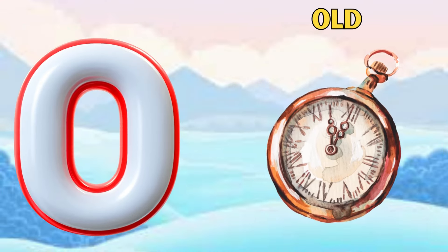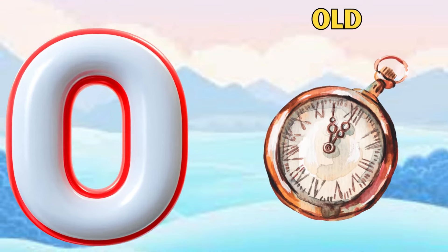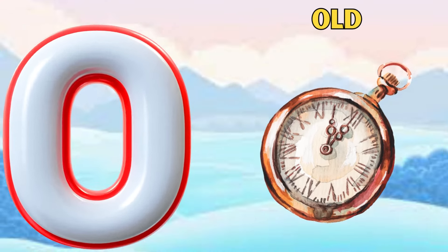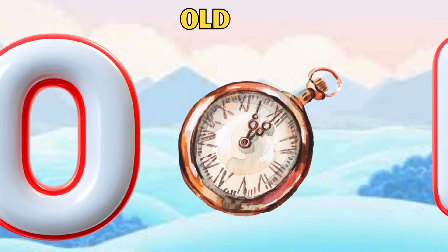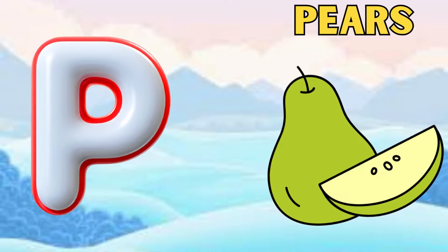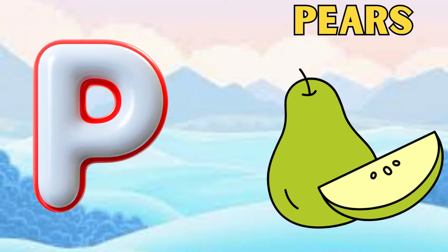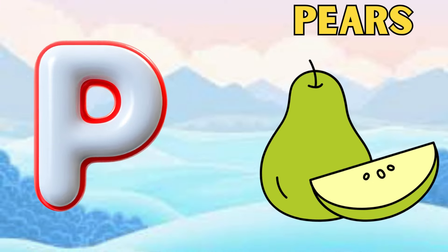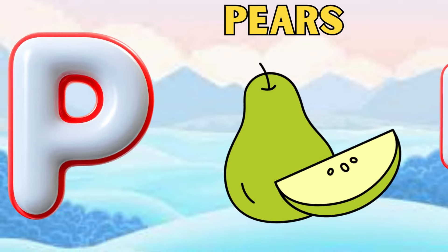O is for old, a, a, old. P is for pair, b, b, pair.